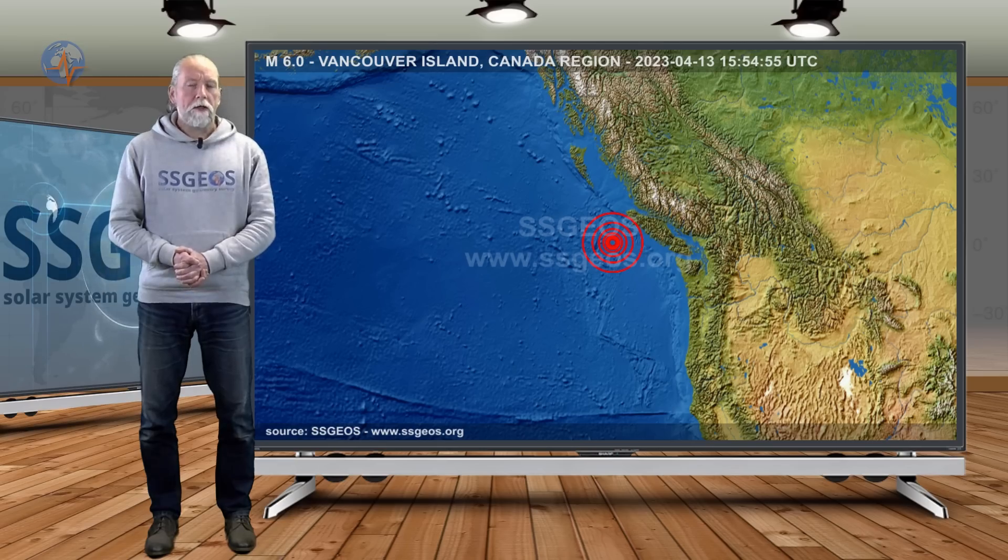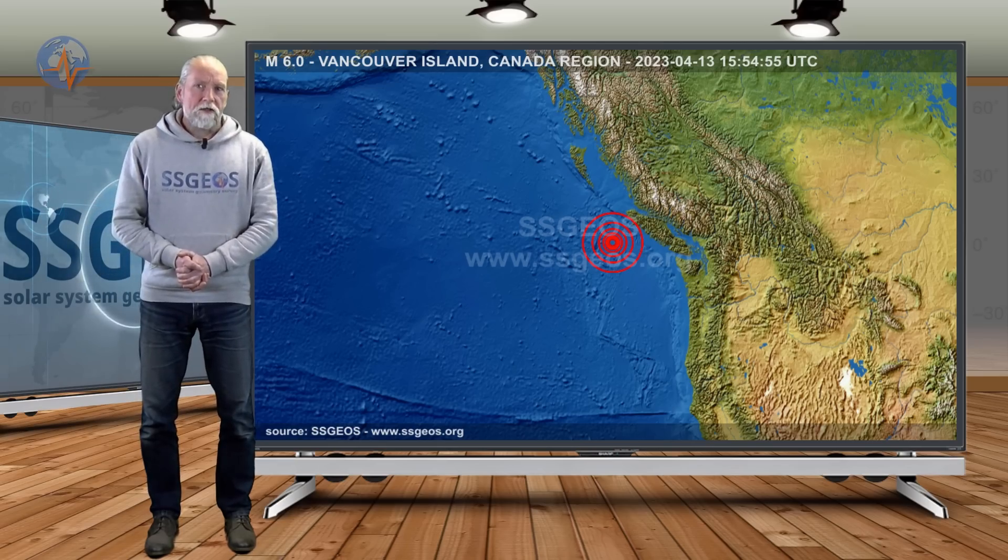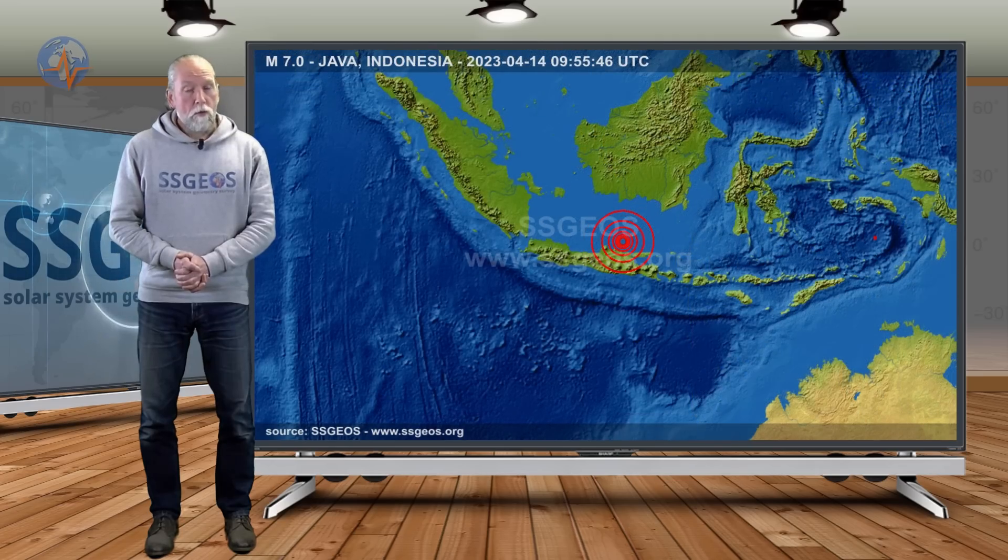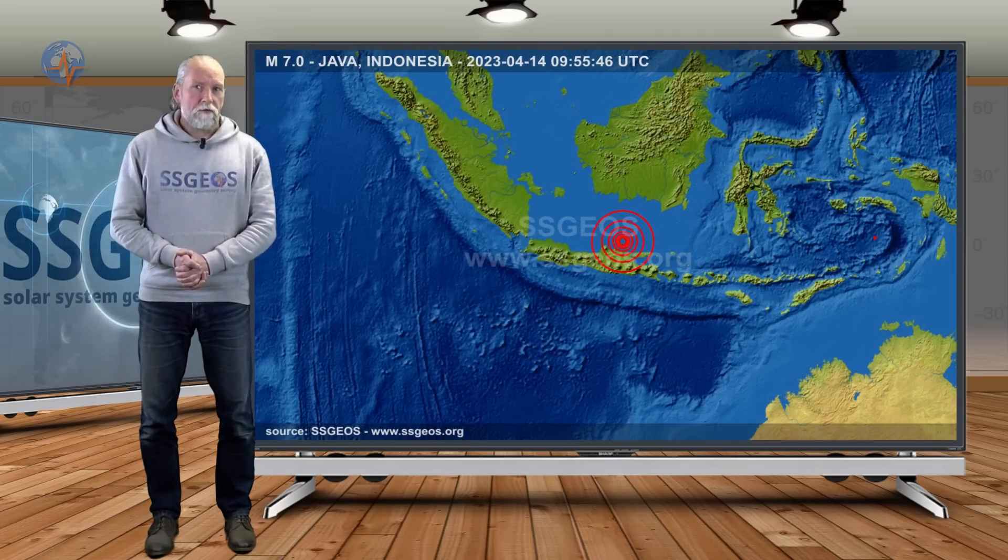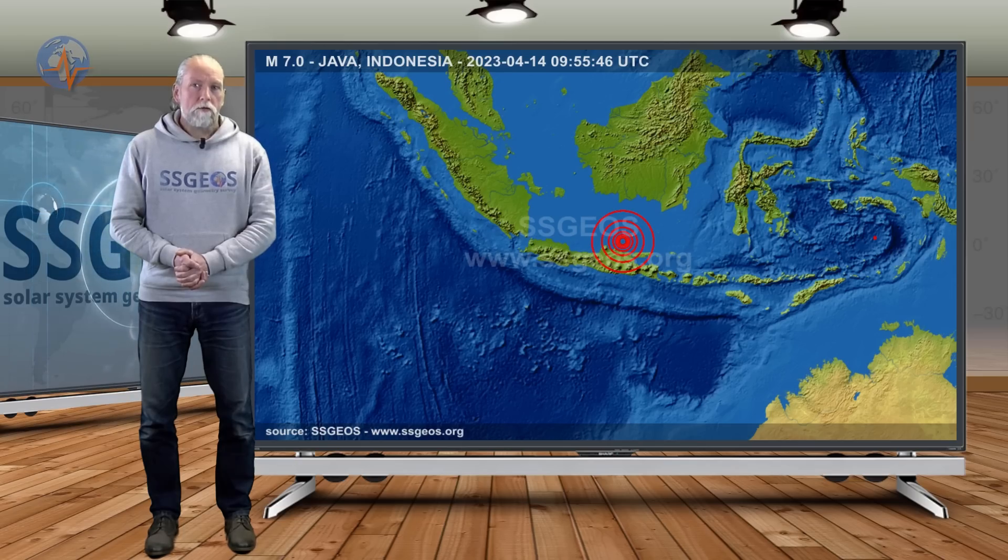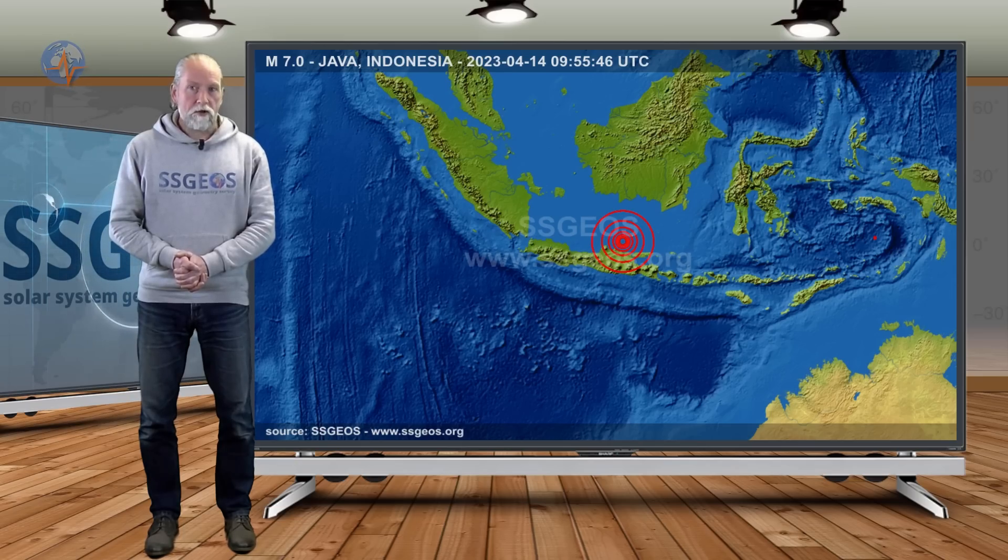Later on the 13th, a magnitude 6 earthquake occurred at the Vancouver Island region, and the morning of the next day, a magnitude 7 earthquake struck deep below the Sunda plate close to Java.